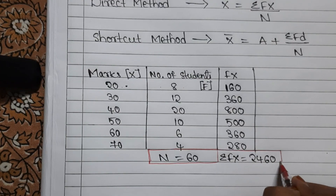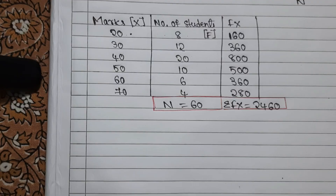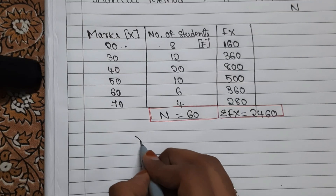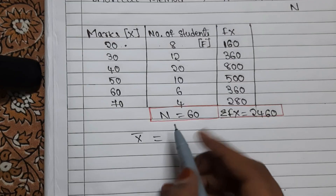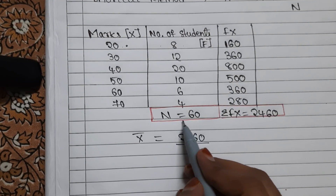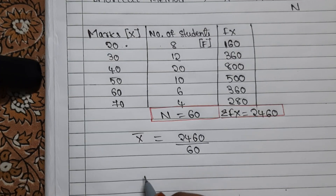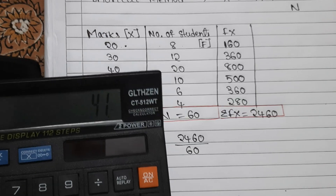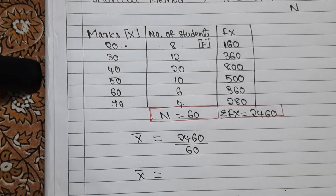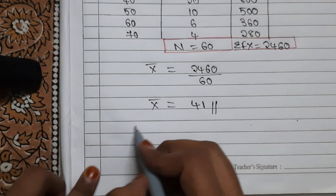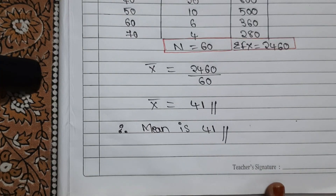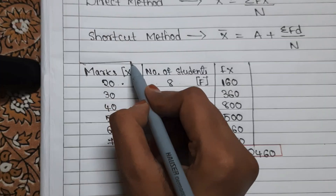Now we substitute these values into the direct method formula. The formula is: x̄ = Σfx / n. So x̄ = 2460 / 60. Using the calculator, 2460 ÷ 60 = 41. Therefore, the mean is 41. Direct method is really very easy.